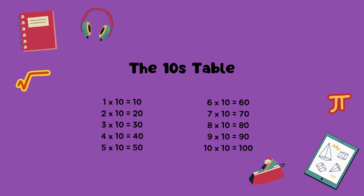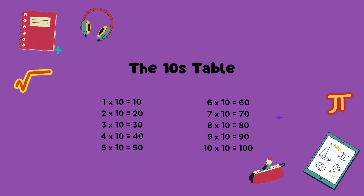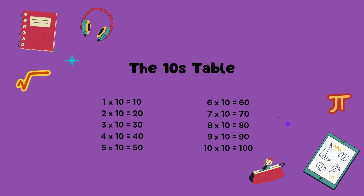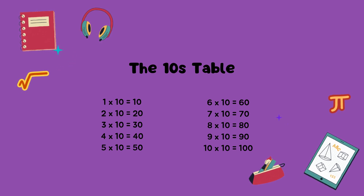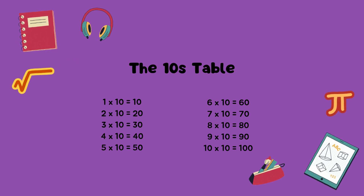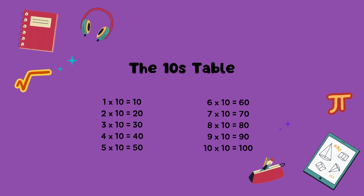7 times 10 equals 70. 8 times 10 equals 80. 9 times 10 equals 90. 10 times 10 equals 100.